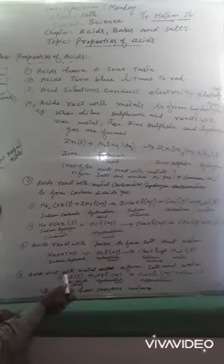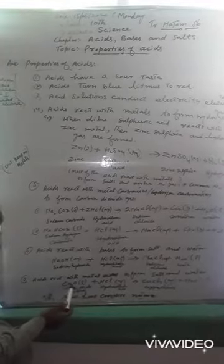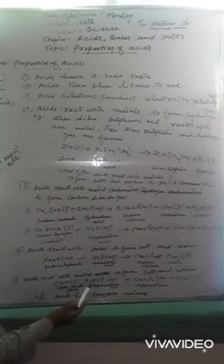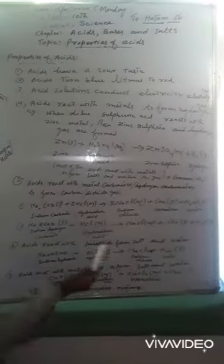Acids react with metal oxides. Acid react with metal oxides to form salt and water. Copper oxide is a basic oxide. It reacts with hydrochloric acid to form copper chloride.